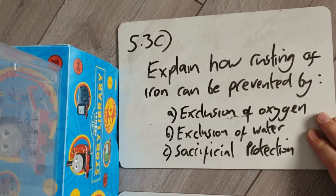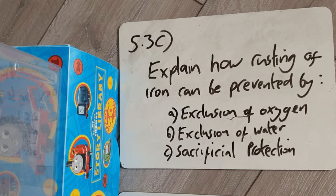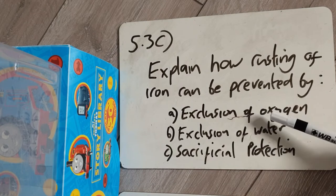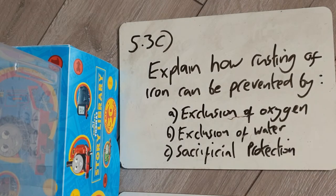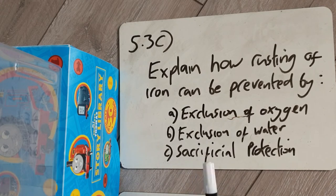Similarly, oiling a bike chain prevents rusting. The chain is predominantly iron, and the oil acts as a lubricant to reduce friction — which is why you oil rather than paint a chain — but crucially, the oil also acts as a barrier keeping out water and oxygen.